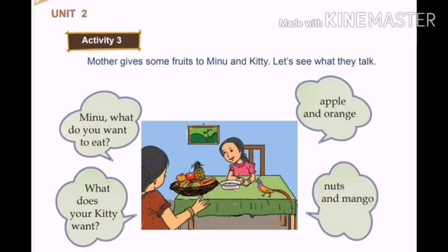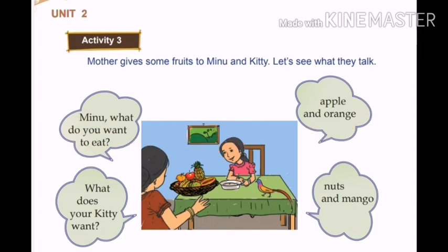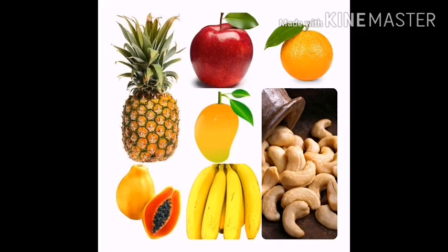Okay. And today's homework is: make two questions starting with 'what do you want?' Repeat — what do you want? Other work is: draw the above mentioned fruits and write down their names.